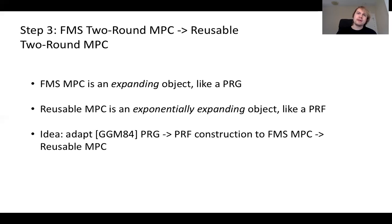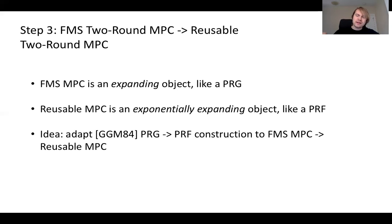We adapt the famous GGM tree-based construction of a PRF from a PRG — a mildly expanding object to a fully expanding object — to the MPC setting, showing a tree-based approach to taking any first-message-succinct MPC and producing a reusable MPC. Instead of a PRG at each node, you essentially have an FMS MPC at each node, and we collapse the whole tree into two rounds using garbled circuits.